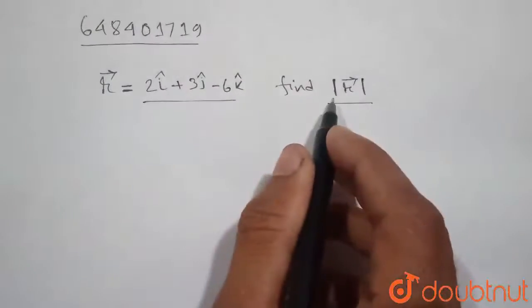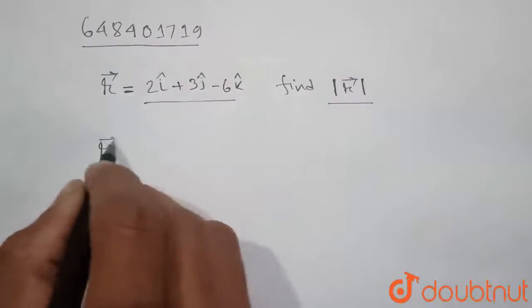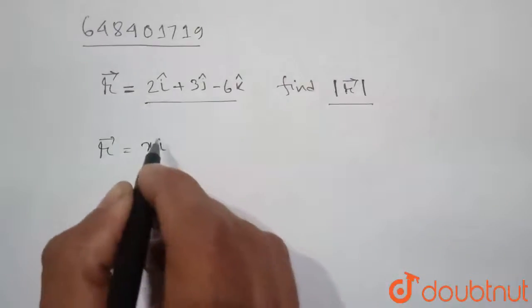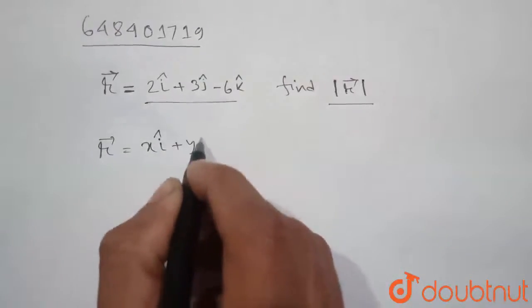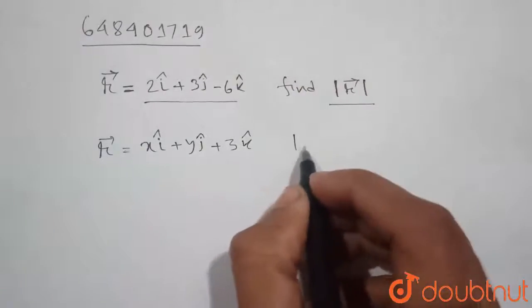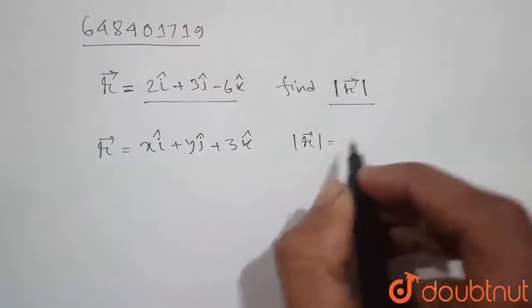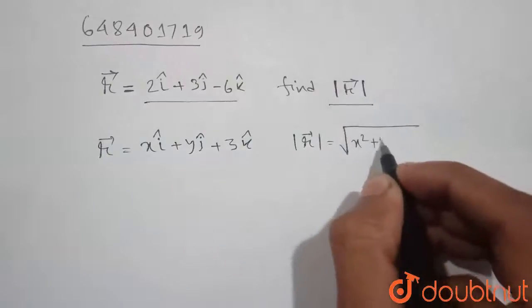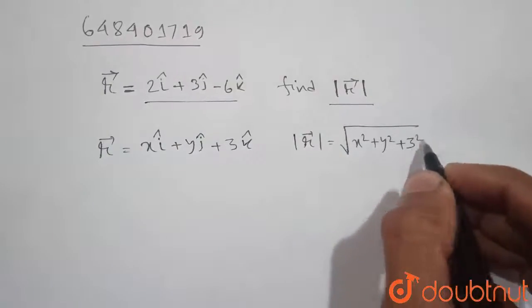So before solving the question, let us write a formula. Let r be any vector such that it is equal to xi cap plus yj cap plus zk cap. Then modulus of r is given by the formula square root of x square plus y square plus z square.